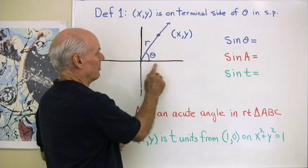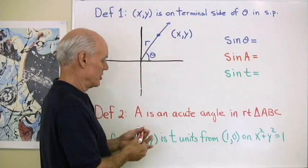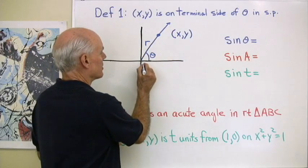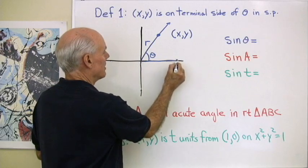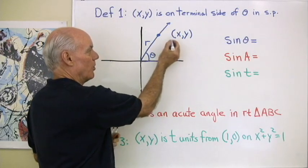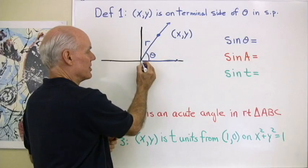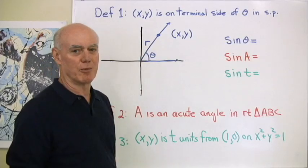So here I've drawn a little picture. Here's theta in standard position. The initial side is along the positive X axis. The terminal side is over here. And XY is a point on the terminal side. R is the distance from the origin out to that point.